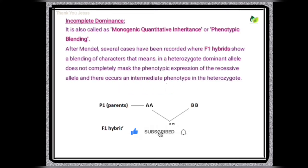Incomplete dominance is also called as monogenic quantitative inheritance or phenotypic blending. According to Mendel, F1 hybrids always express the dominant character. But after Mendel, several cases have been recorded where F1 hybrids show a blending of characters — that means in a heterozygote, the dominant allele does not completely mask the phenotypic expression of the recessive allele, and there occurs an intermediate phenotype in the heterozygote.